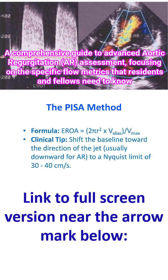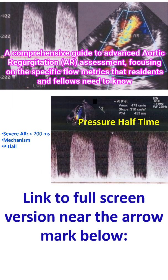Proximal isovelocity surface area is often more difficult in aortic regurgitation than in mitral regurgitation because the flow convergence zone is frequently constrained by the left ventricular outflow tract walls. The formula: effective regurgitation orifice area equals 2πr² multiplied by aliasing velocity, divided by maximum velocity. Clinical tip: shift the baseline toward the direction of the jet — usually downward for AR — to a Nyquist limit of 30 to 40 cm per second.